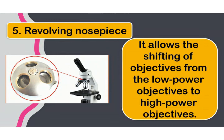Next, the revolving nosepiece. The revolving nosepiece allows the shifting of the objectives from the low power objective to the high power objective.